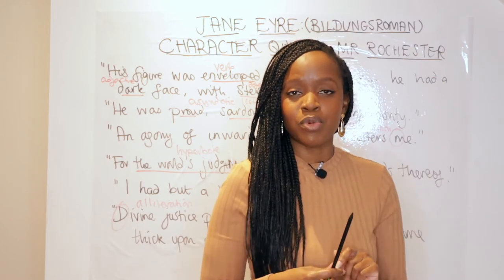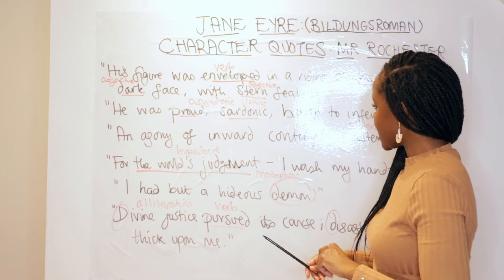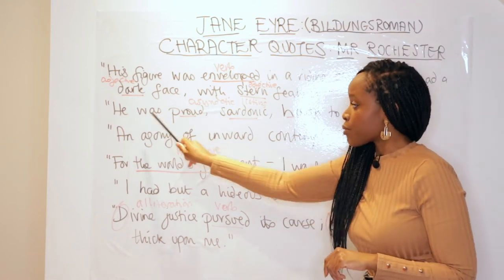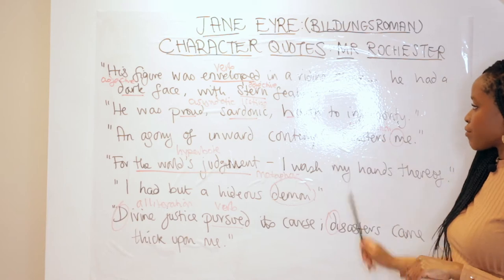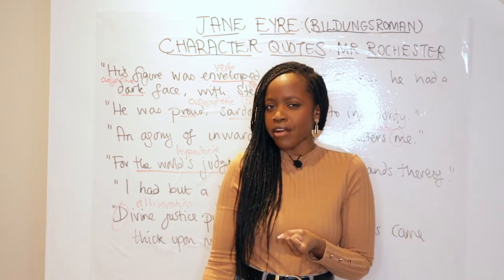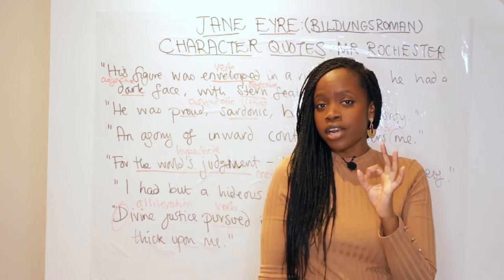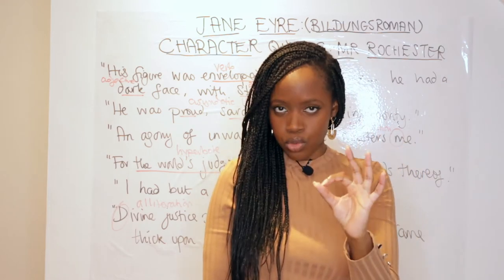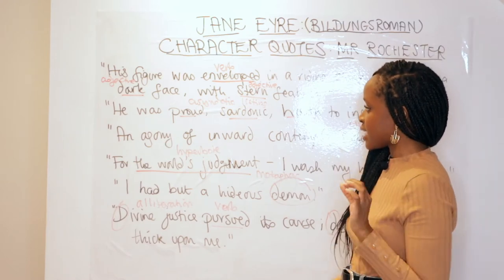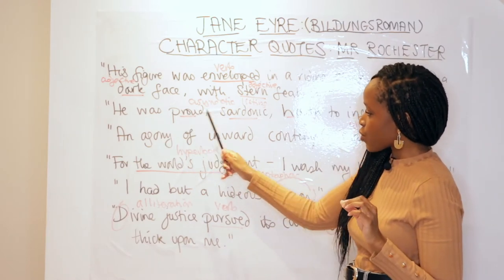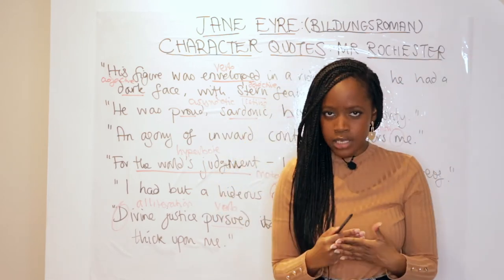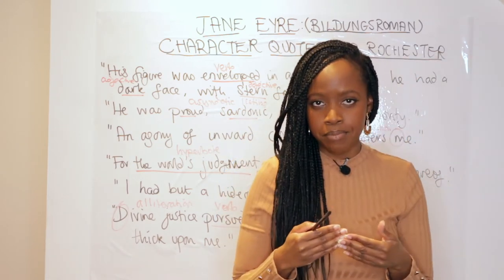The second quotation to remember is that he is described as 'proud, sardonic, harsh to inferiority.' He's a really harsh character. The word-level analysis here is a structural technique — an ascendant listing of the adjectives 'proud, sardonic, harsh' to show that he has almost this veneer of sternness and harshness to him.